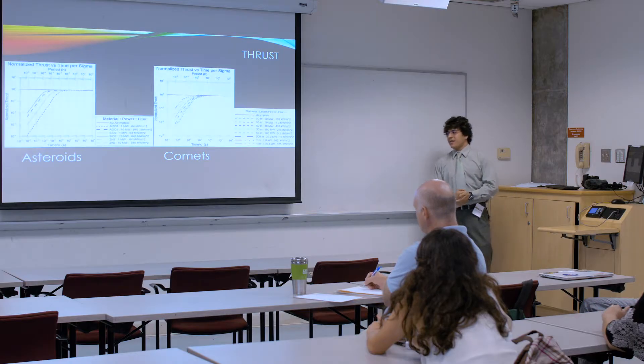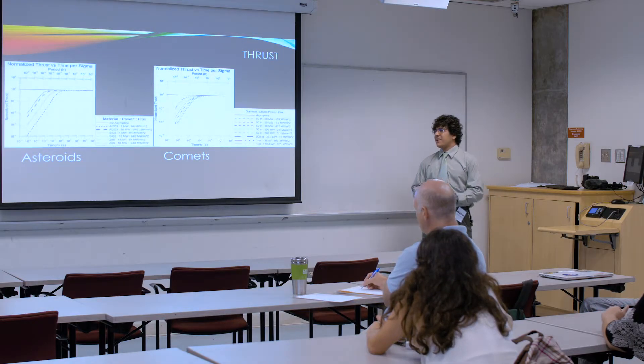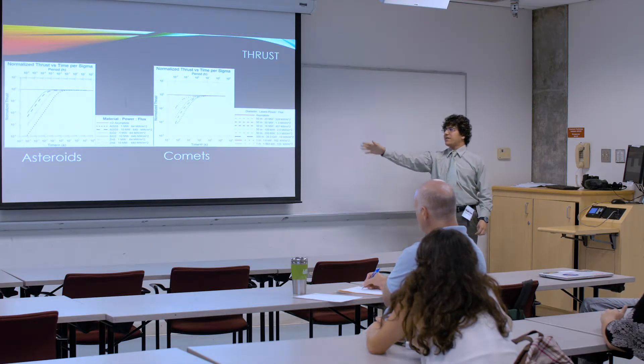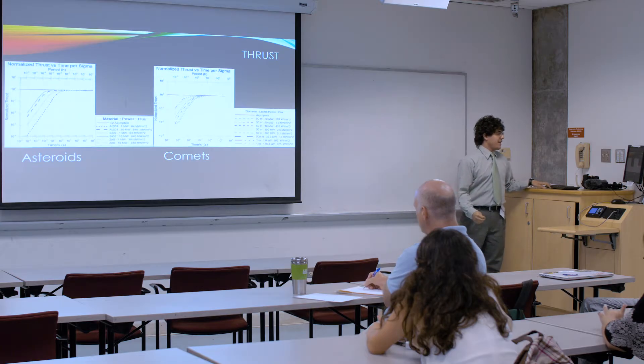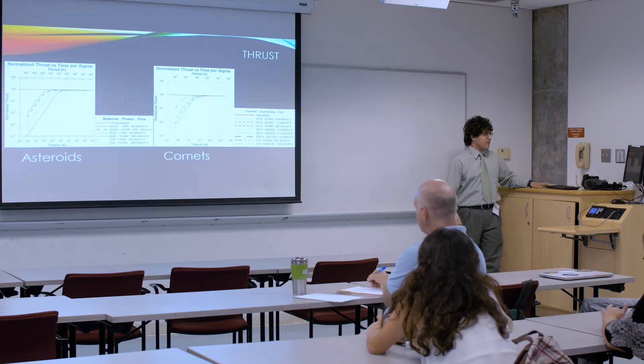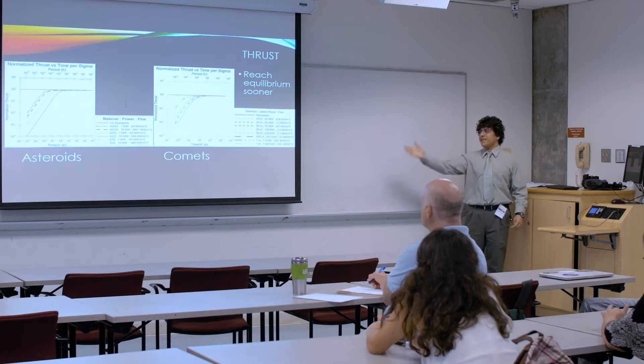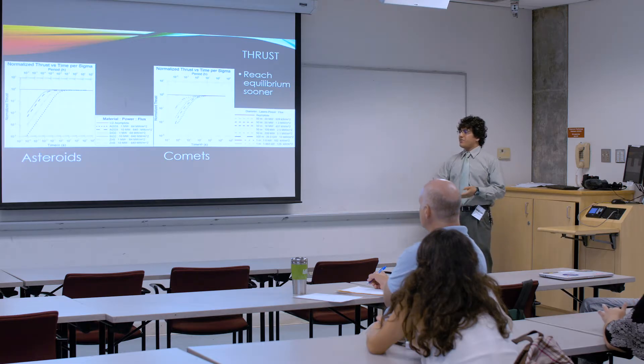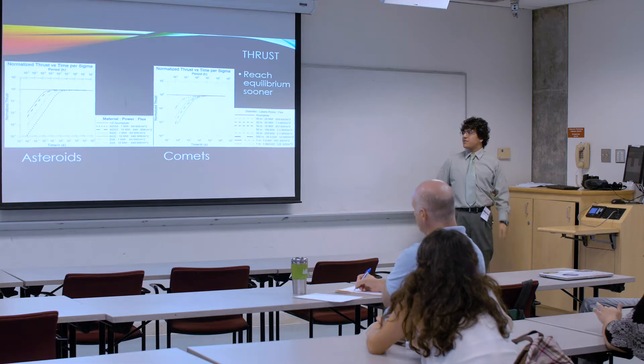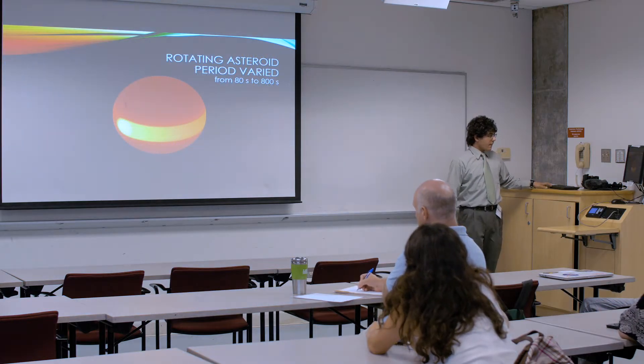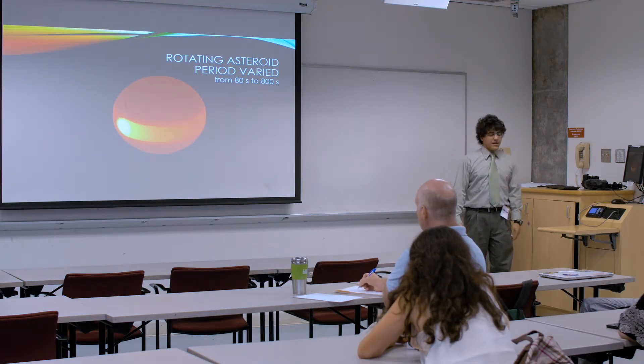Now to compare asteroids and comets. On the left, we have the asteroid case, on the right, comets, and you can see the normalized thrust versus period. The basic conclusion you can draw from all this data that we took with multiple laser powers, multiple-sized asteroids, and different types of comets, is that comets reach equilibrium sooner because of their thermal properties.